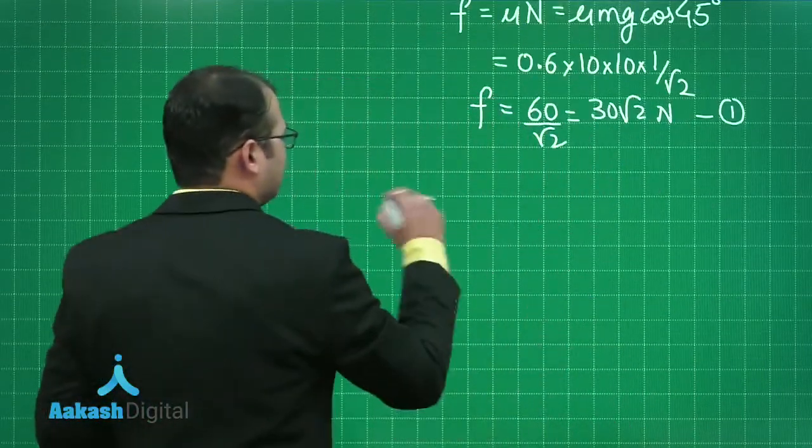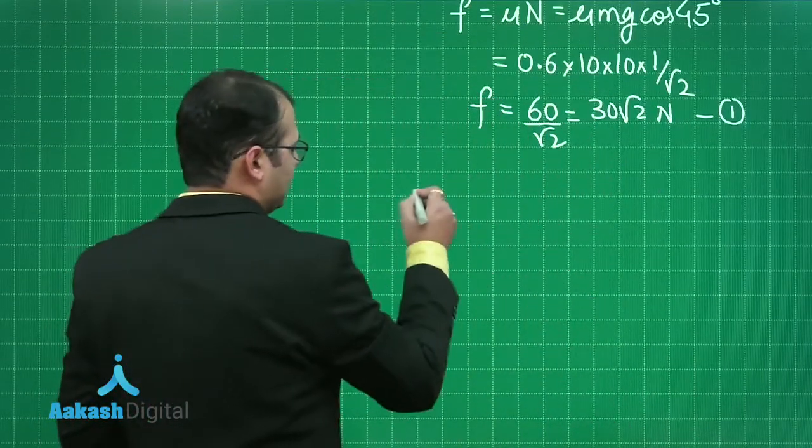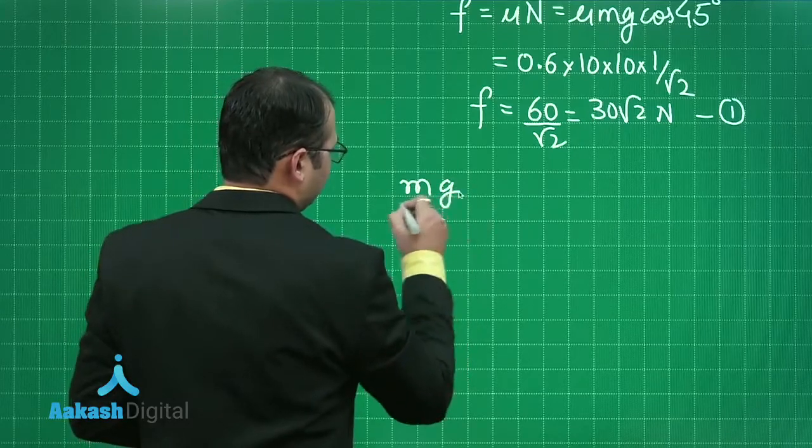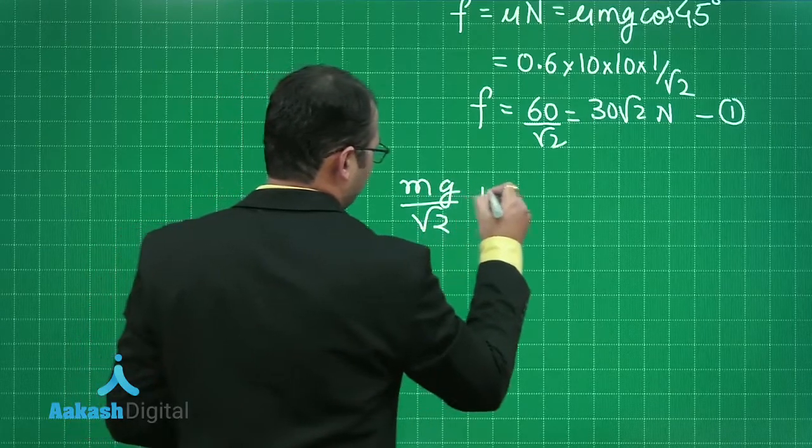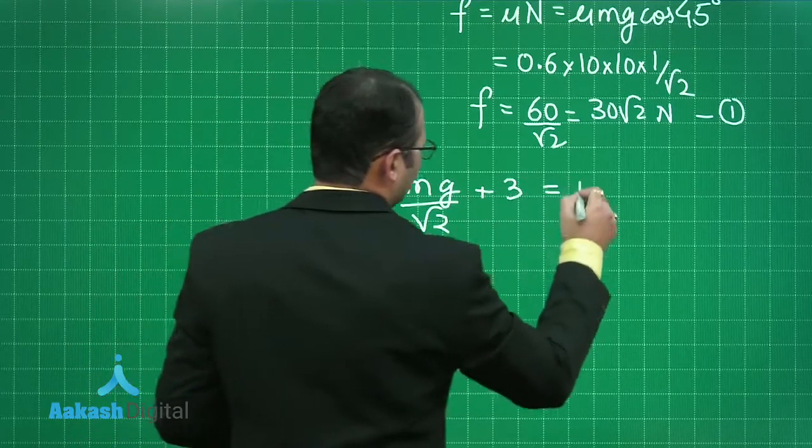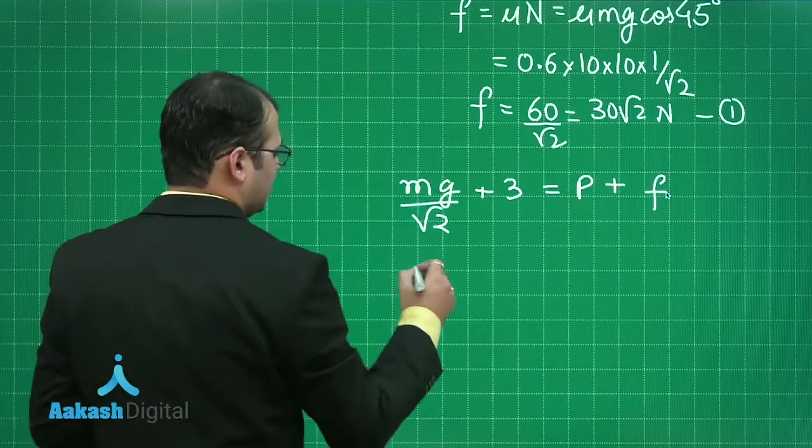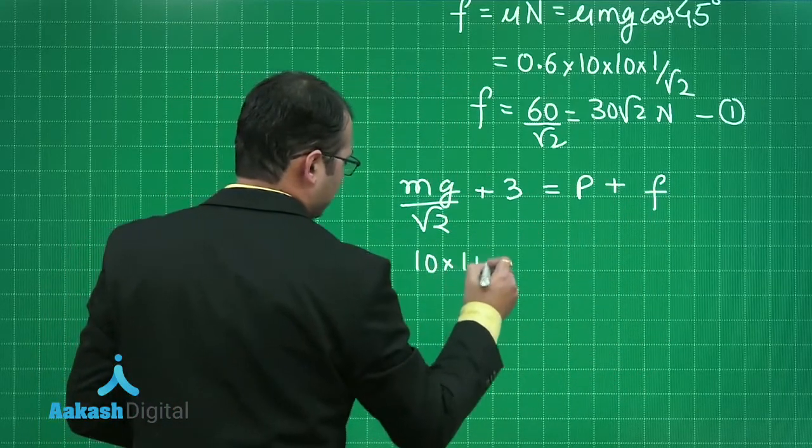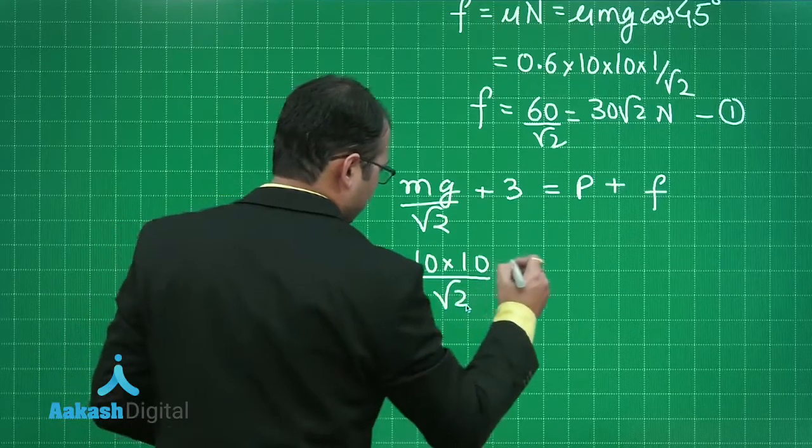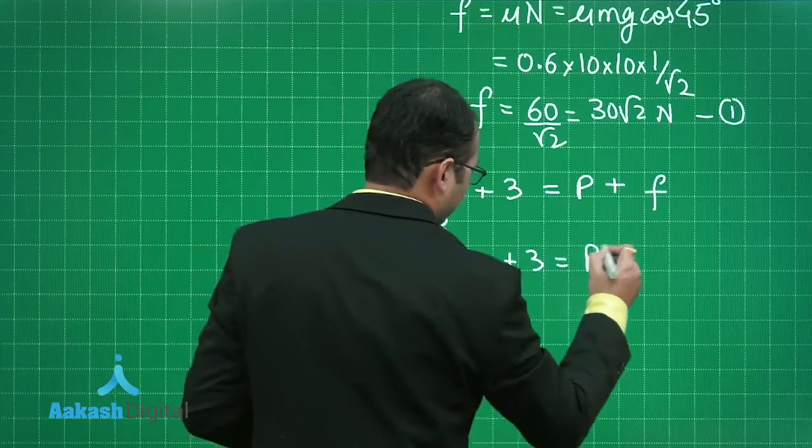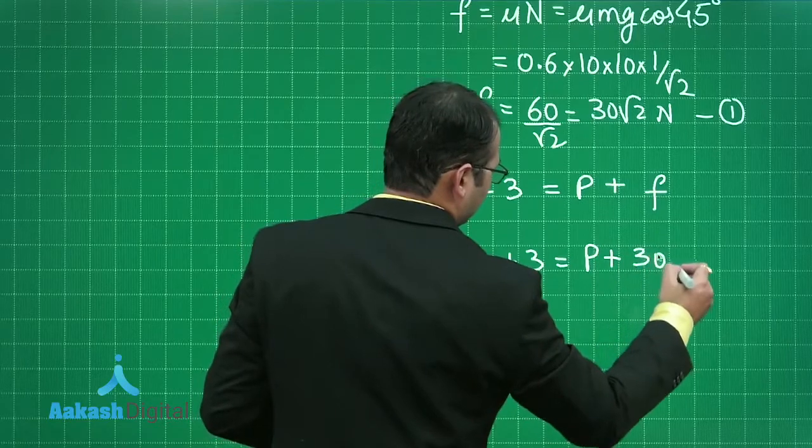Secondly, I said that force acting downwards that is sum of Mg by root 2 plus 3 should be equal to P plus F. This Mg would be 10 into 10 by root 2 plus 3 would be equal to P plus 30 root 2 Newton.